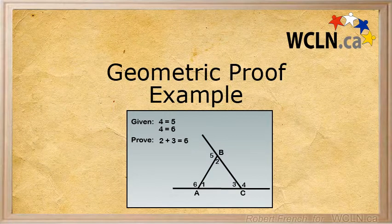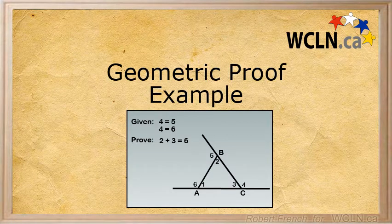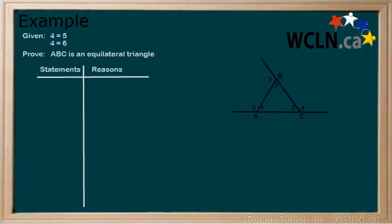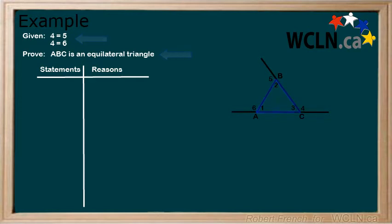In this tutorial, we will be looking at a proof that involves a triangle. Consider the following: we are given two statements and need to prove that ABC is an equilateral triangle.